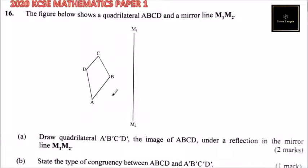This is question number 16. The figure below shows a quadrilateral ABCD and a mirror line M1M2. So we have our quadrilateral ABCD and our mirror line.